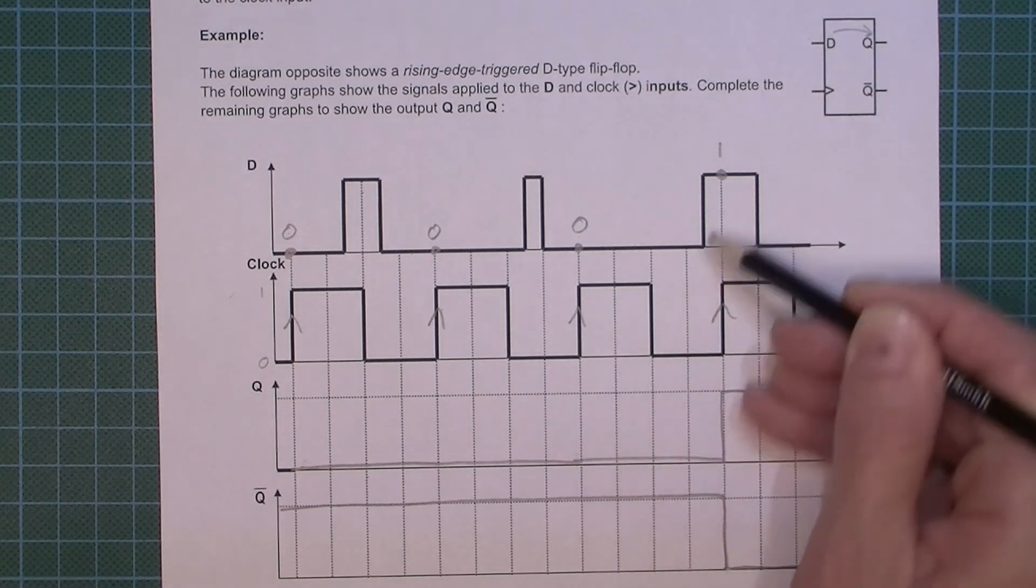And things only happen to the output at the point of a rising edge. And at a rising edge, whatever is at D, in this case zero, will get transferred to Q. So this D gets transferred to Q, this D gets transferred to Q, and now this logic one D gets transferred to Q. That's why it goes up to that.